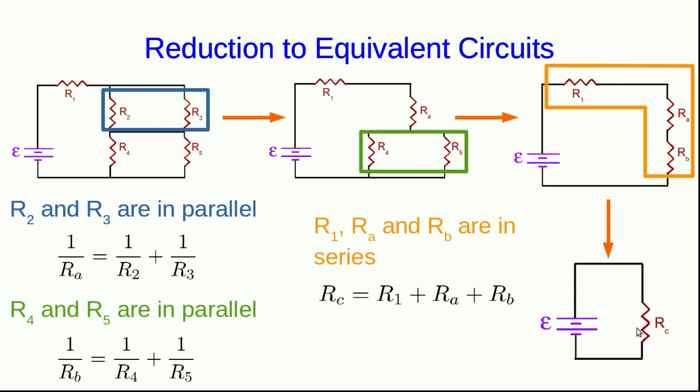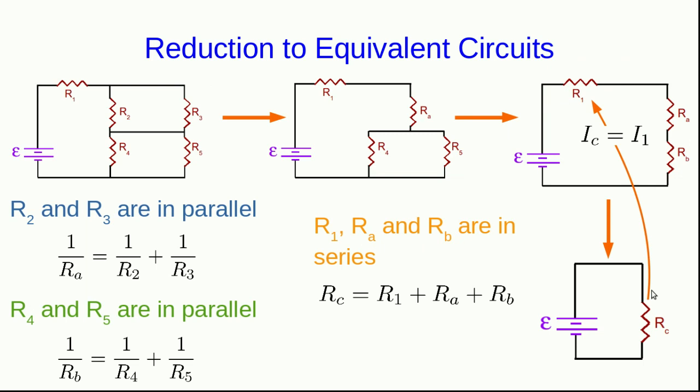Now to actually find the currents, which would be what we're after, we would have to work backwards. The current through Rc would be the same as the currents through each of R1, Ra, and Rb, and so in particular, that gives us the current I1 that we want. Now, the potential difference across Ra is the same as the potential difference across 2 and 3, and the potential difference across Rb is the same as the potential difference across 4 and 5. So now we know those potential differences, and we can use Ohm's law to get the currents, and so on, to do the same thing with resistors 2 and 3.